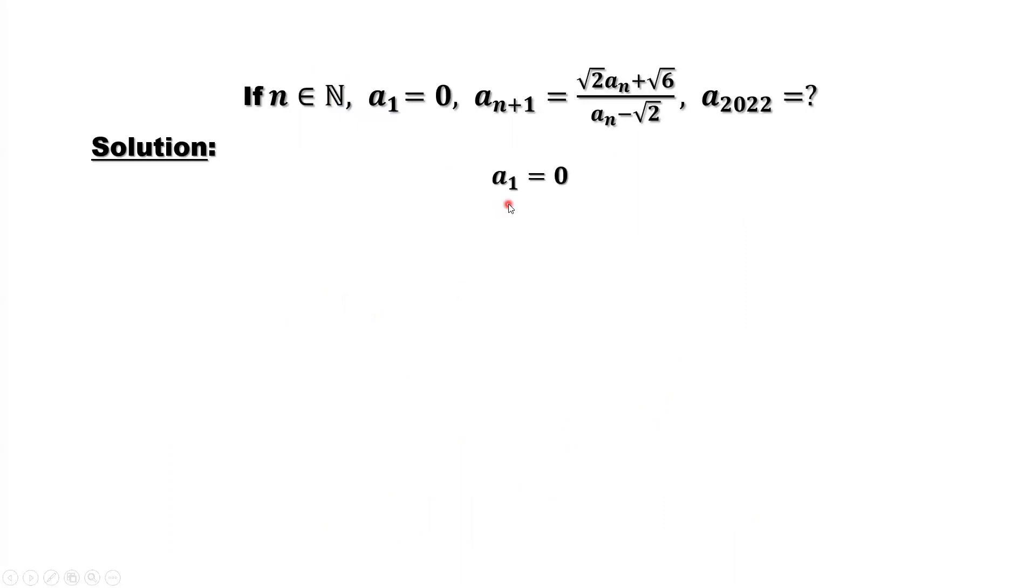A1 is given, which is zero. We can calculate A2 using the recursion formula. Replace An by A1. A1 here, we'll get next one, A2. A1 is zero, so this part disappears. A1 is zero, so the numerator is square root of six. The denominator is negative square root of two. Square root of six divided by square root of two is three, so the answer is negative square root of three, which is A2.